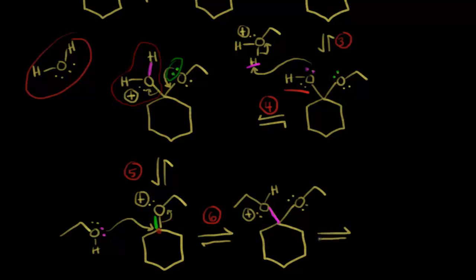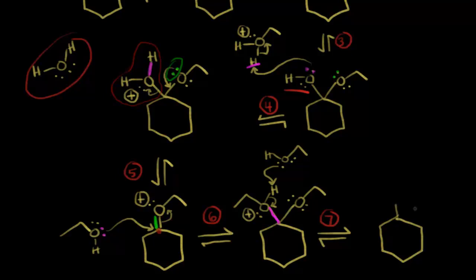We are almost there. Step seven would be a deprotonation step. All we do is take that proton off and we would form our acetal product. A molecule of ethanol comes along and functions as a base. A lone pair of electrons takes this proton, leaving these electrons behind on the oxygen. Finally, we are able to draw our acetal product. On the left we would have our oxygen with an ethyl, and this carbon is also bonded to another oxygen with an ethyl coming off of it. We've formed our acetal product. A very long mechanism, but easier to go through an actual reaction.